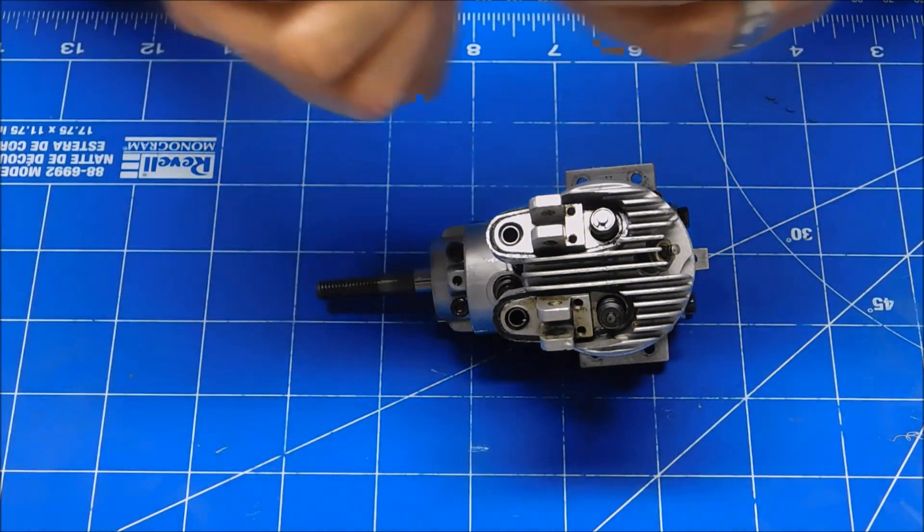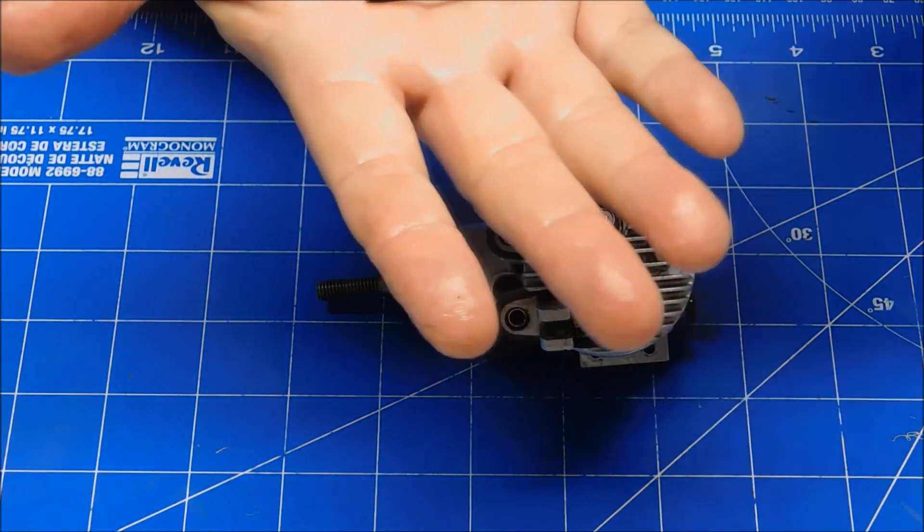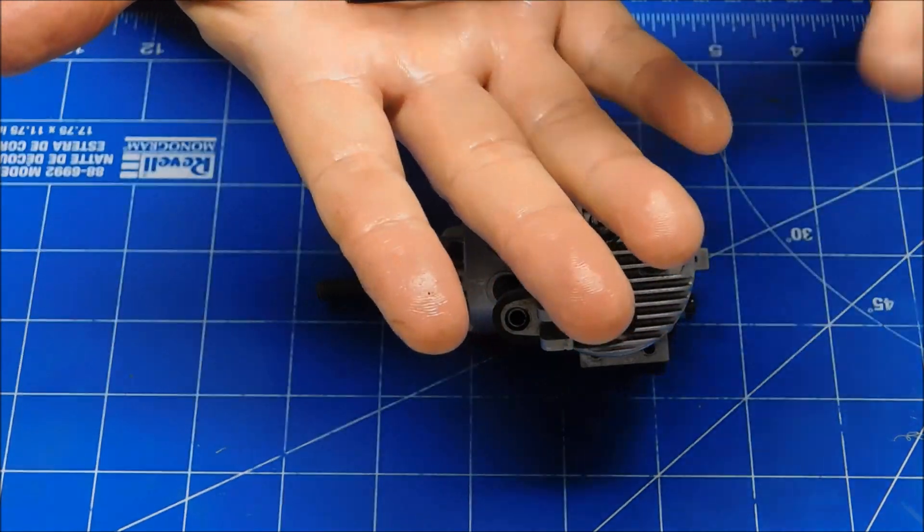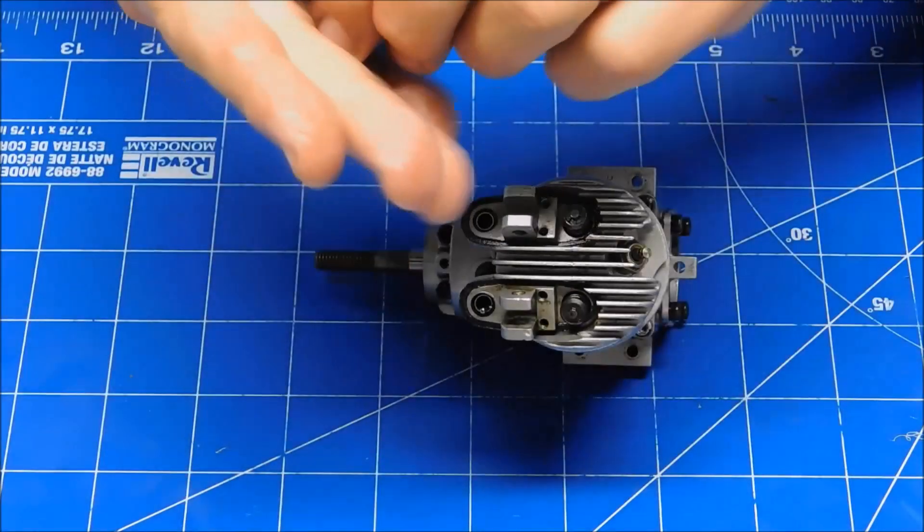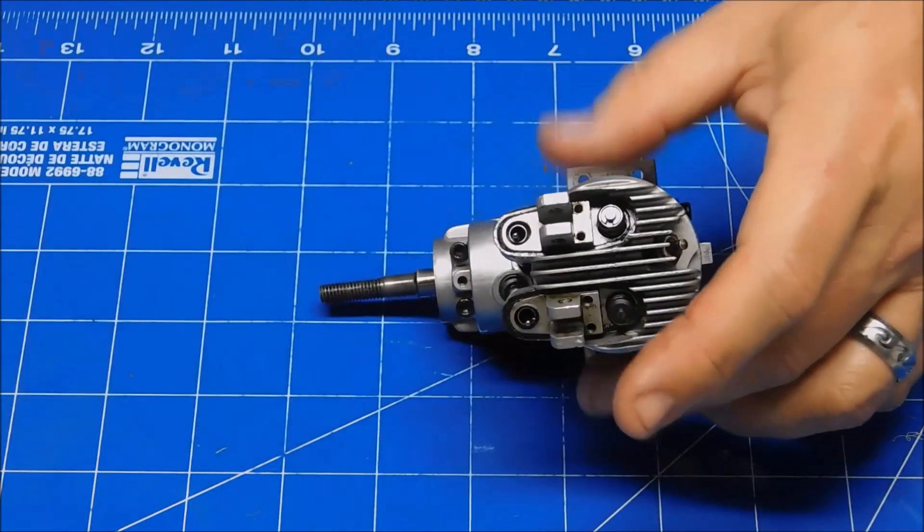Push rods for these. There's not a right or a left, but they are tapered. The tapered end goes up towards the top so it can engage in the rocker arm.